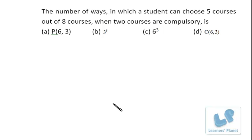Let's try this question. The number of ways in which a student can choose five courses out of eight courses when two courses are compulsory. Now, if the two courses are compulsory, he has to choose only three courses.